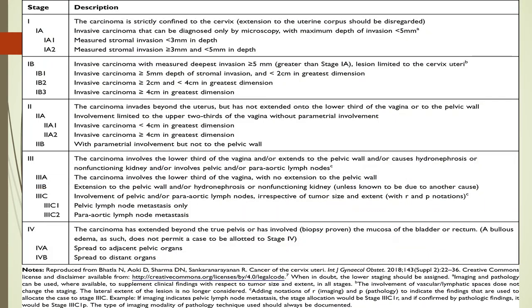According to the latest 2018 FIGO guidelines, carcinoma cervix is divided into four stages. In stage 1, the carcinoma is strictly confined to the cervix. In stage 2, the carcinoma invades beyond the uterus but has not extended onto the lower third of the vagina or to the pelvic wall. In stage 3, the carcinoma involves the lower third of the vagina and extends to the pelvic wall or causes hydronephrosis or non-functioning kidney, or involves pelvic or para-aortic lymph nodes.